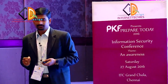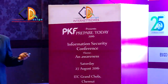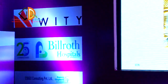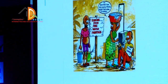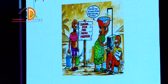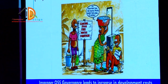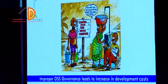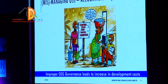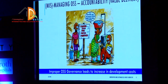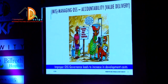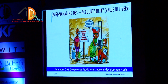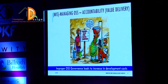Absence of dedicated resources to manage the OSS project will kill you — that is an indication of failure. Third: improper OSS governance leads to an increase in development cost. If you are not properly managing the overall thing, you'll put out a banner claiming a target time to market, but if you don't manage it well, you will end up with problems.